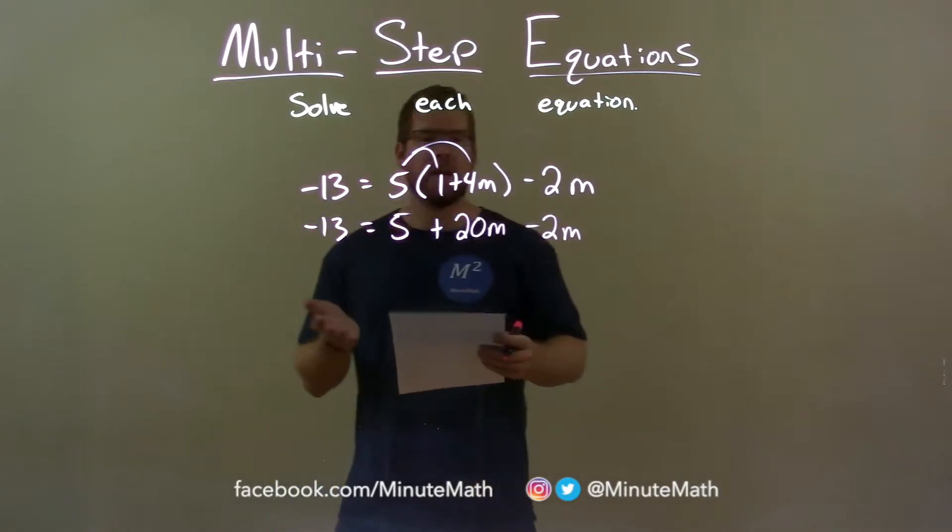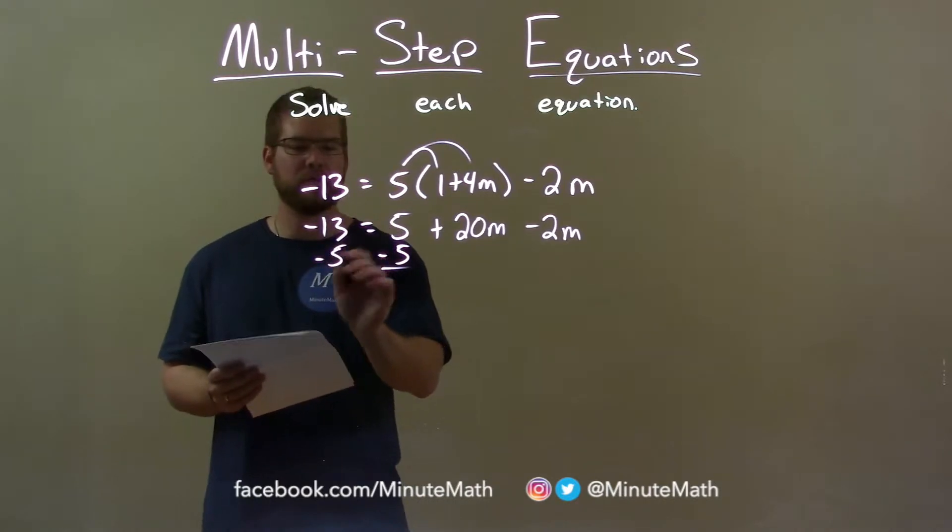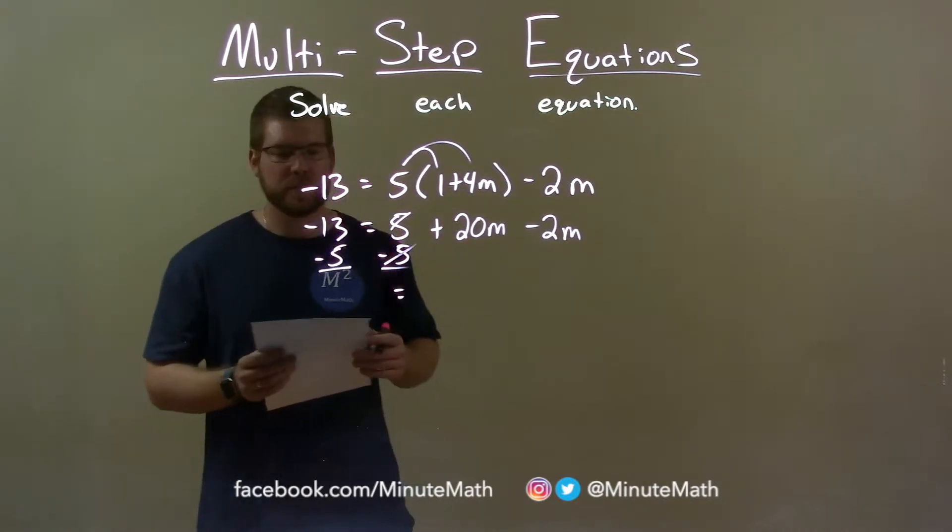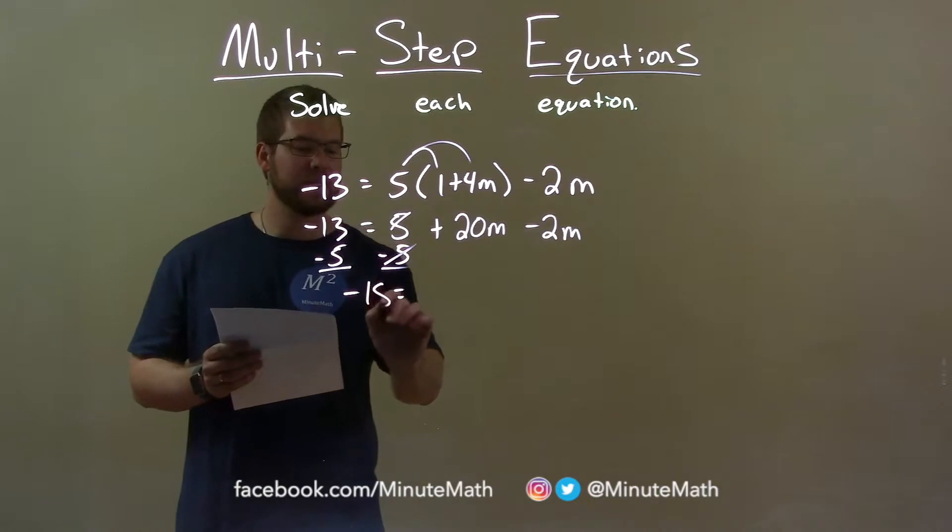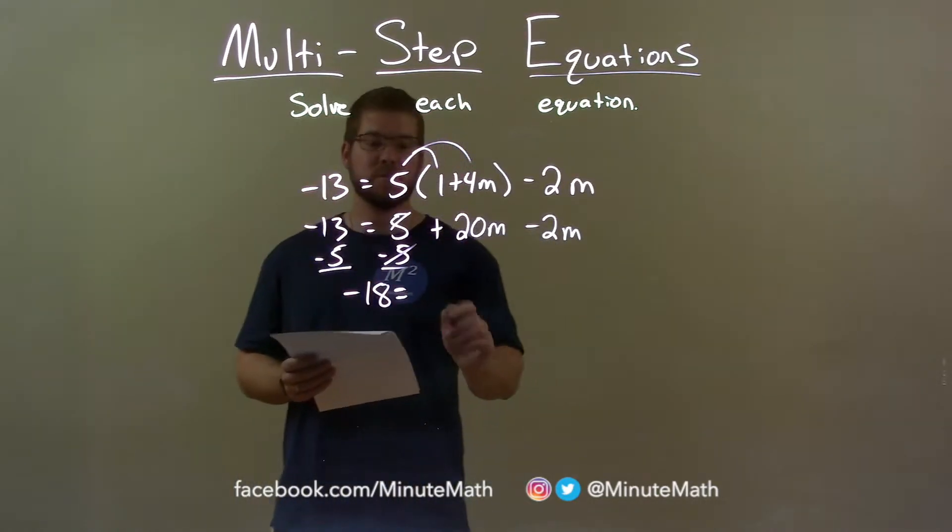From there, we want to combine our like terms. So if I subtract 5 to the left, bring it over, we're left with negative 13 minus 5 is negative 18. We can combine 20m and negative 2m to be 18m.